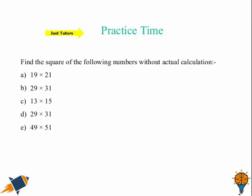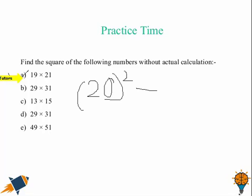Now let us try a practice question. This one. So here we need to find the square of the following number without actual calculation. So here let us try number 1. So 19 times 21. The number between them is 20. So we need to find the square of 20 take away 1. So square of 20 is 400. And if we are going to take away 1 from it, it will be 399. That is the answer.